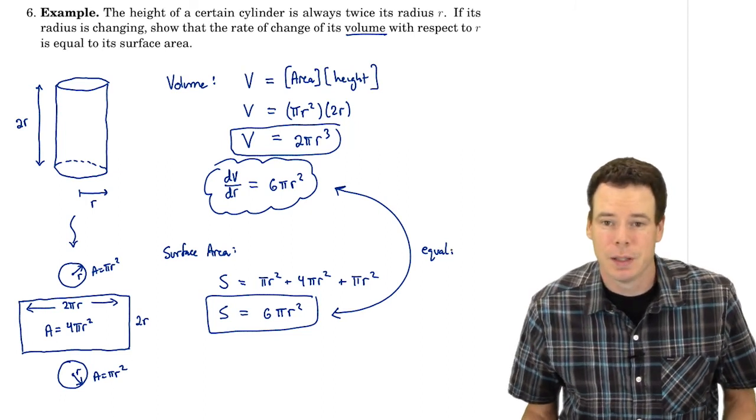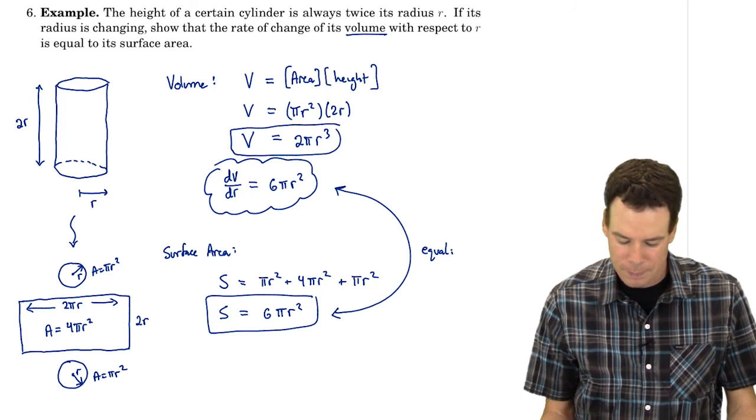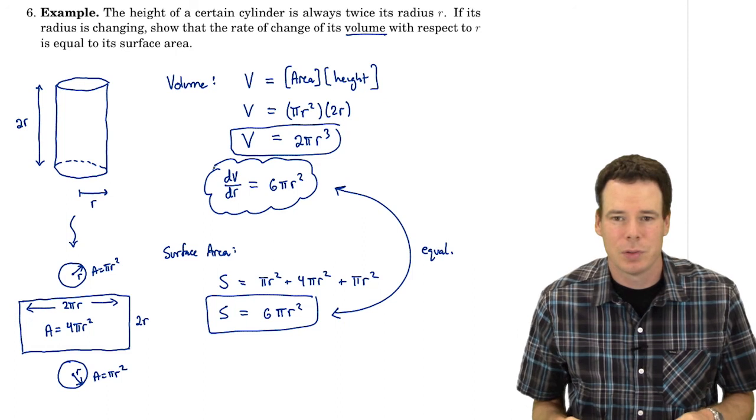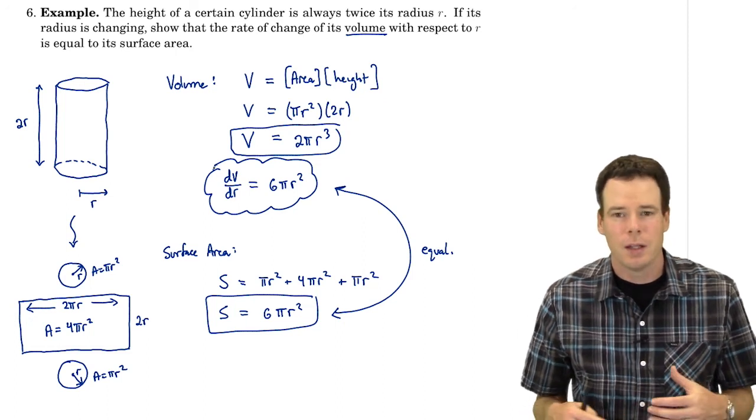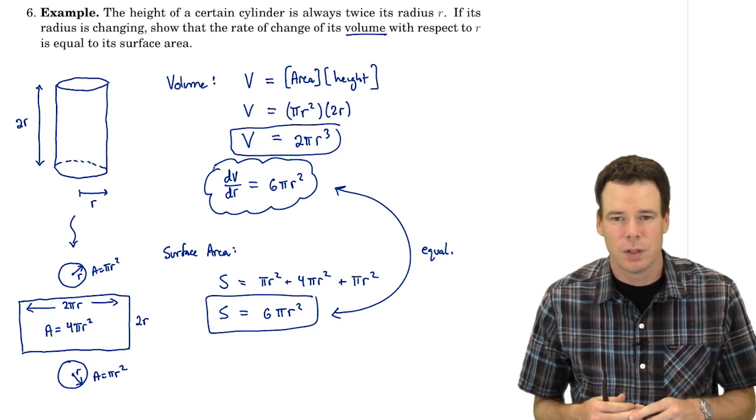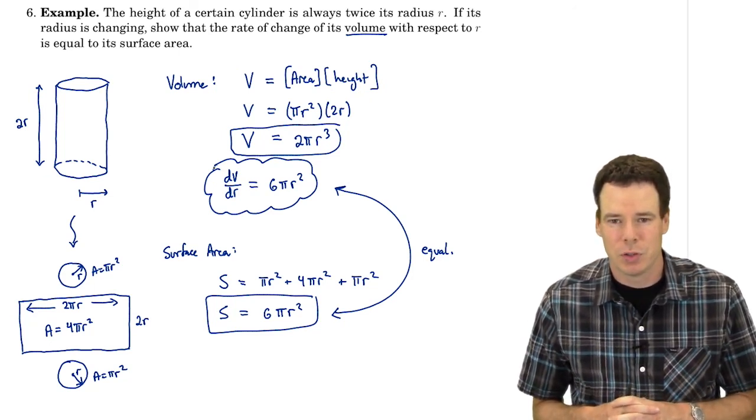It may seem surprising that the rate of change in the volume is the surface area. I'll leave it for you to explore examples in the textbook that show why there ought to be this connection for some geometric figures, particularly the circle and sphere.